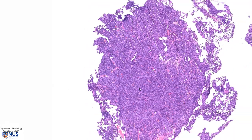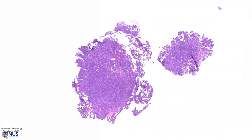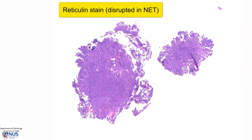Sometimes it can be difficult to distinguish between normal anterior pituitary gland and a pituitary neuroendocrine tumor, particularly if the biopsy is very small and very fragmented. One useful marker or stain that we can do is reticulin, where we would expect a disrupted reticulin staining pattern with much fewer reticulin fibers in a pituitary neuroendocrine tumor compared to the normal anterior pituitary gland, which shows a very nice nested reticulin pattern.